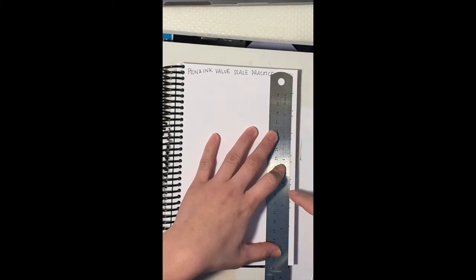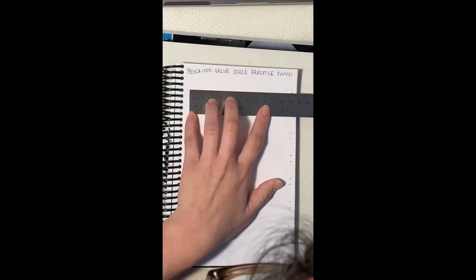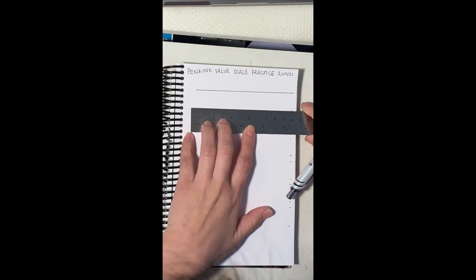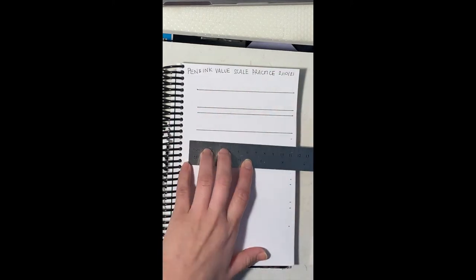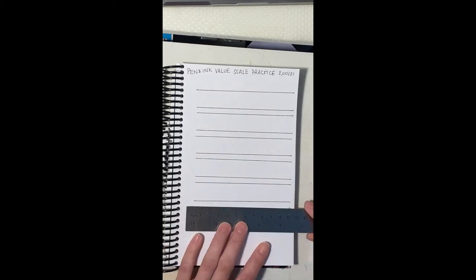For my value scales, they're about three quarters of an inch by three quarters of an inch, but it does not have to be precise. I measured it out, but as long as you have six boxes for each of your value scales, that is fine.